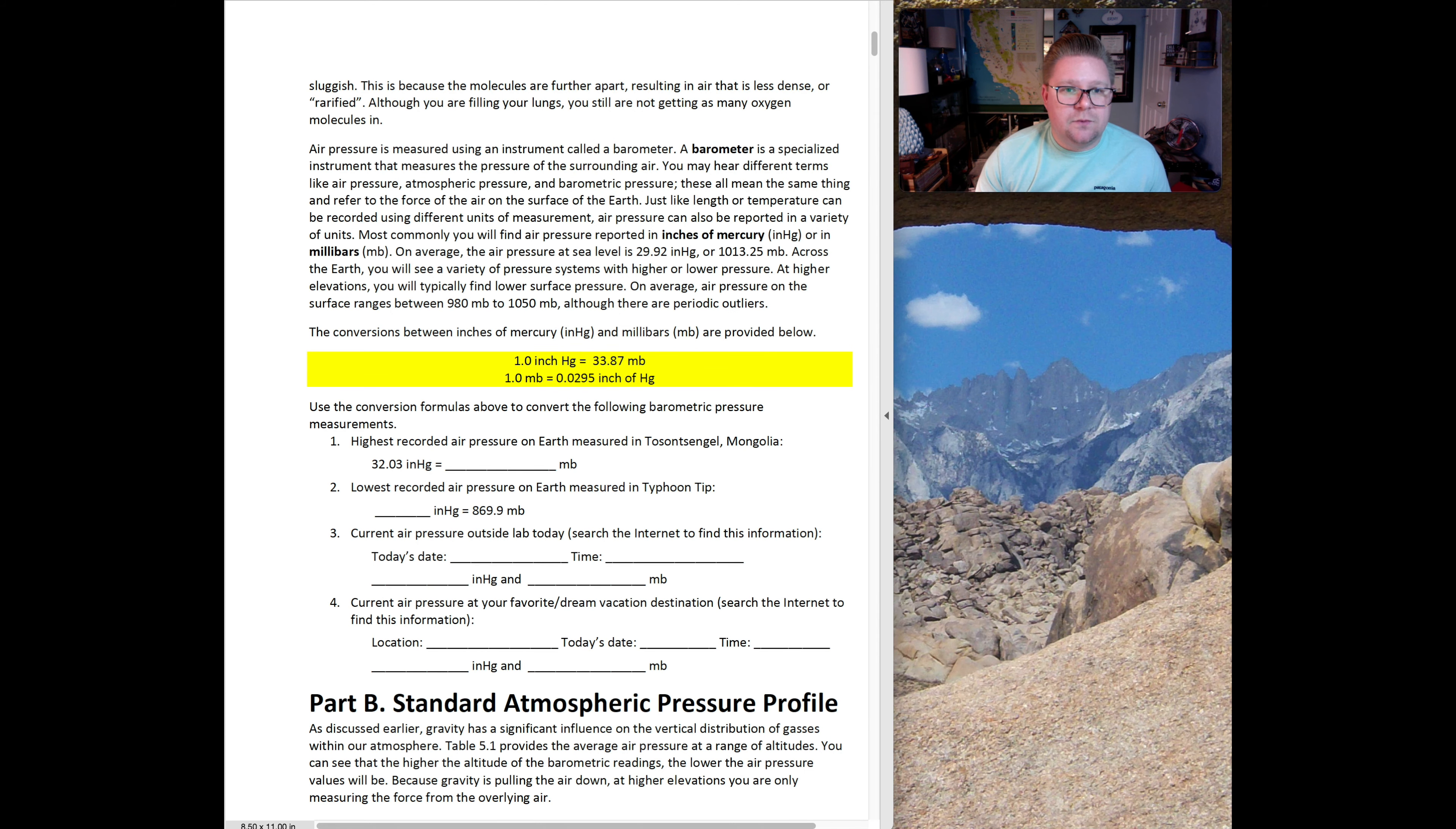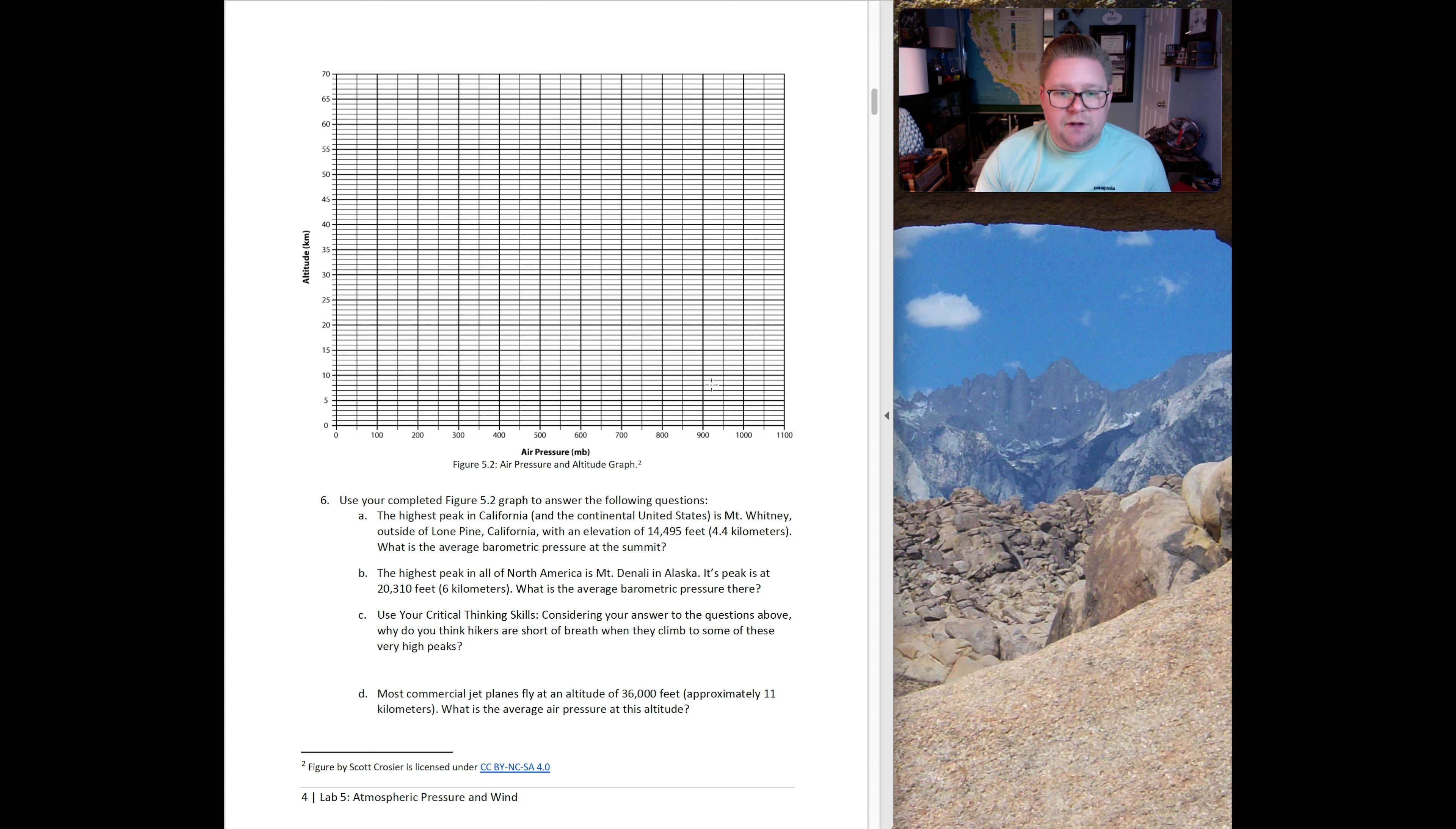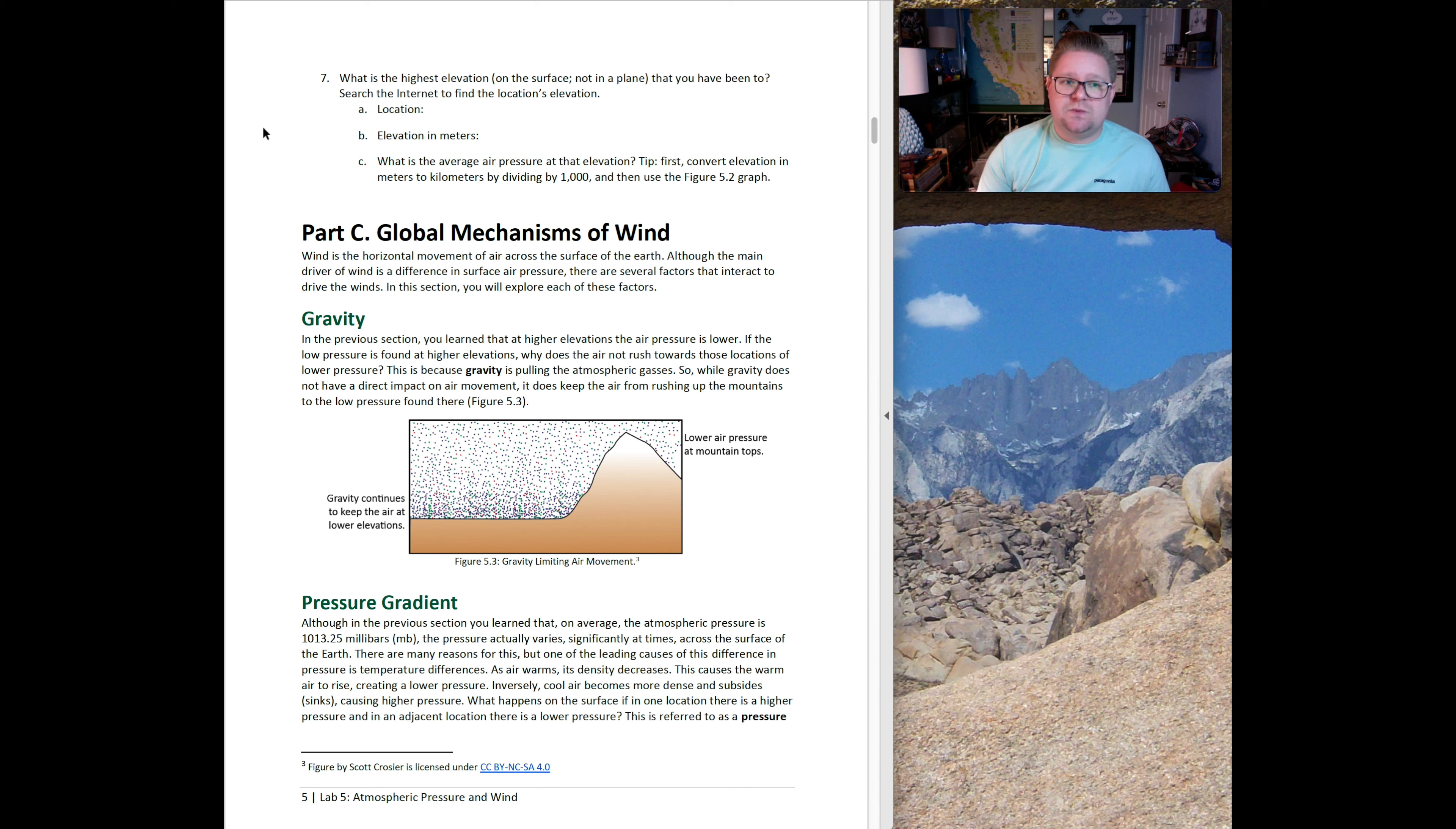Question 6 is using that completed figure to answer the following questions. The highest peak in California and really the continental US is Mount Whitney. What type of pressure are they experiencing at Mount Whitney? What type of pressure are they experiencing at these other locations? Question 7 says, what is the highest elevation and surface that you've been to? Research that place. Maybe it's been Mammoth or Big Bear, or maybe you've traveled over the pond into other countries. That wraps up Part B.